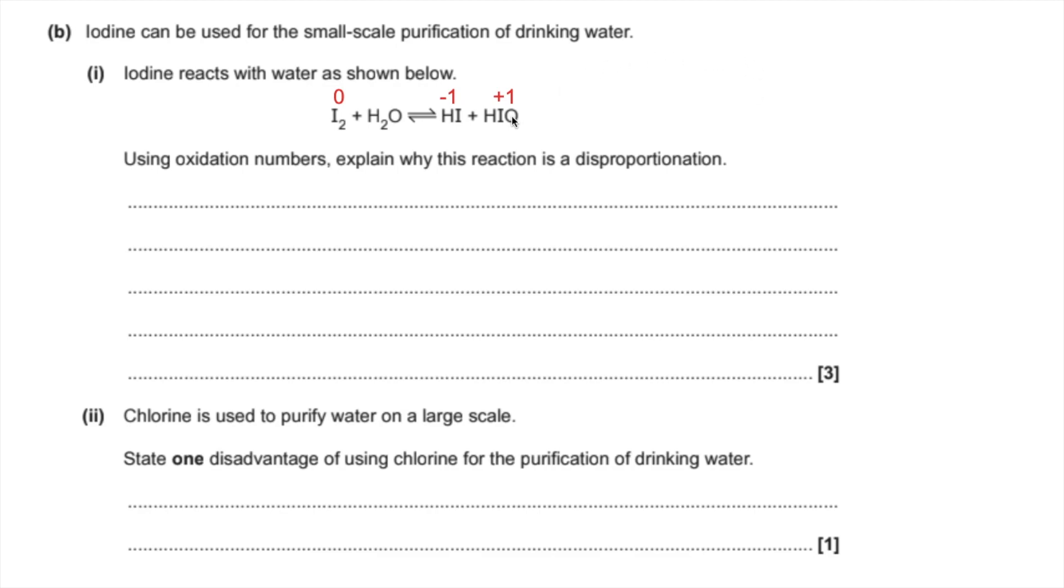And that's because the oxygen, because it's more electronegative, has a negative two oxidation number. Hydrogen's plus one. So to maintain neutrality, the iodine has to be plus one. So first thing I'm doing is, given the definition for disproportionation, that's where the same element is oxidized and reduced.